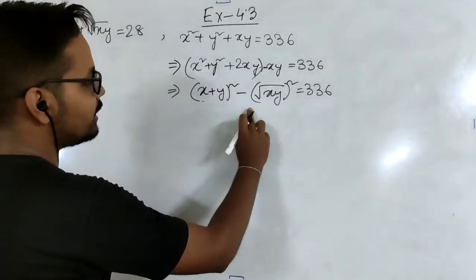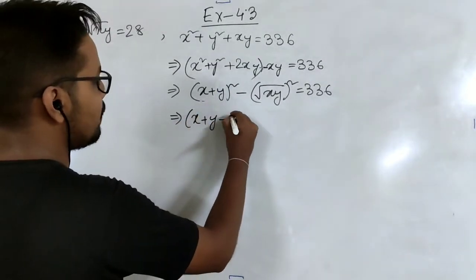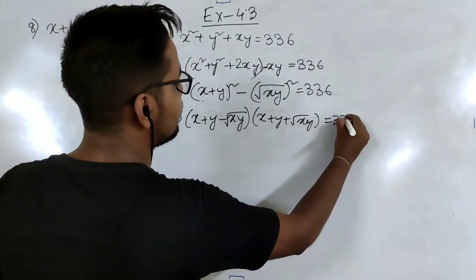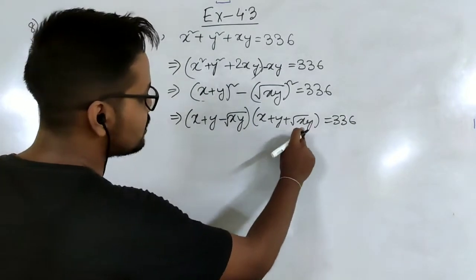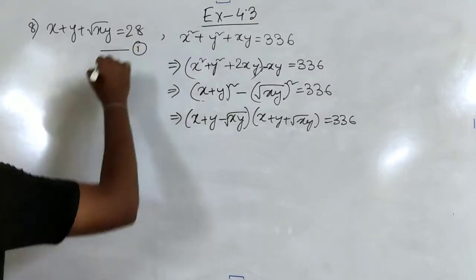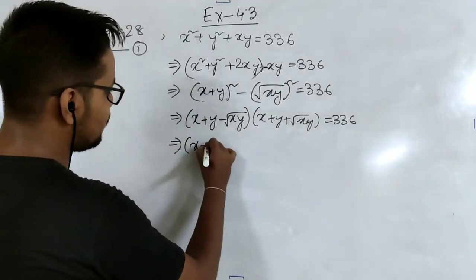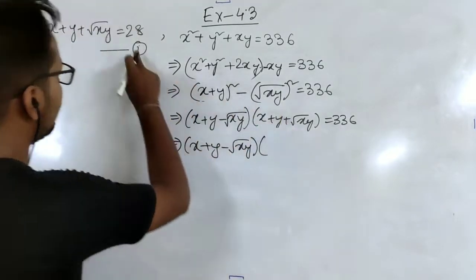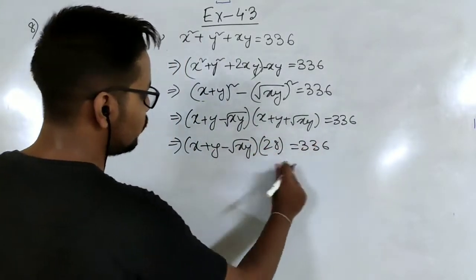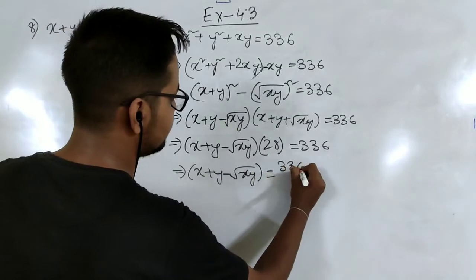So we write (x plus y plus root xy) times (x plus y minus root xy) equal to 336. Taking this as equation 1, we substitute the known value: x plus y plus root xy equals 28, so (x plus y minus root xy) times 28 equals 336. Therefore x plus y minus root xy equals 336 by 28, which gives 12. We take this as equation 2.